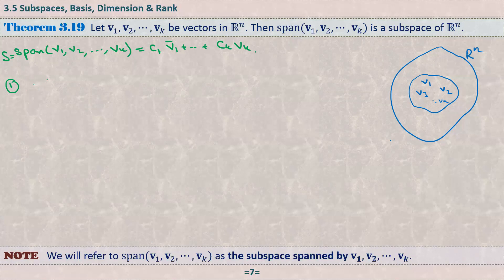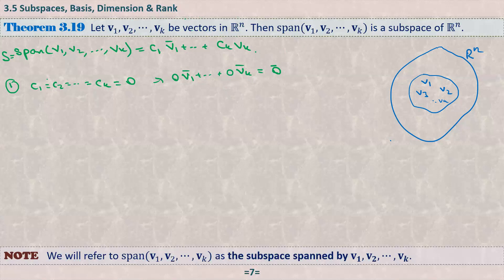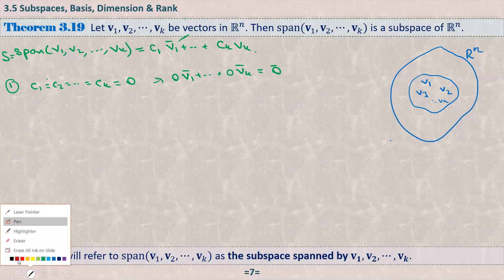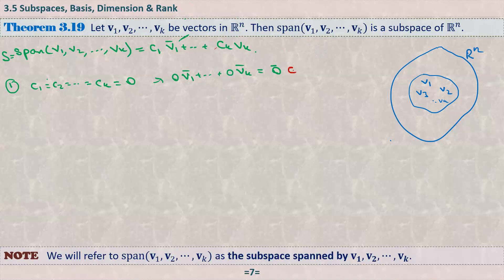Recall that Span{v1, v2, …, vk} means all possible linear combinations c1·v1 + c2·v2 + … + ck·vk, where c1, c2, …, ck are any real numbers. Let S = Span{v1, …, vk}. Condition 1 — S contains the zero vector: set all coefficients c1 = c2 = … = ck = 0, giving 0·v1 + … + 0·vk = 0. So the zero vector belongs to S.